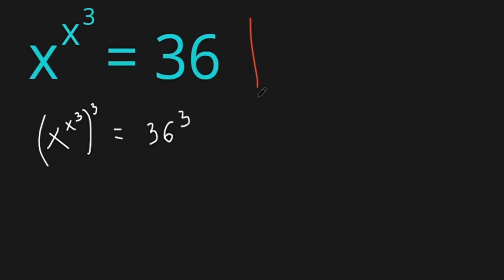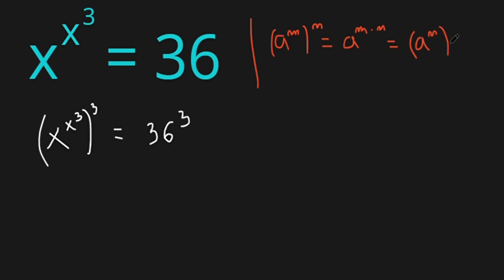We need to know this formula: a to the power of n, all this to the power of n, is equals to a to the power of m times n. And this is equals to a to the power of n, and all this to the power of m.